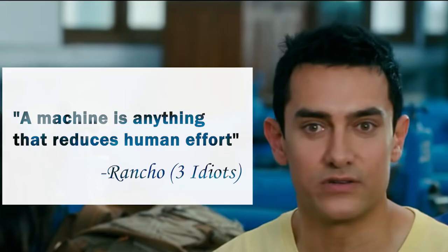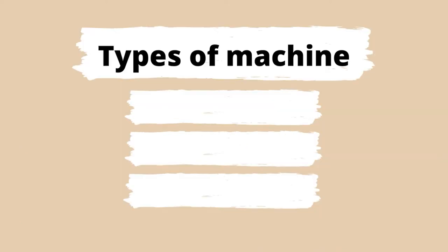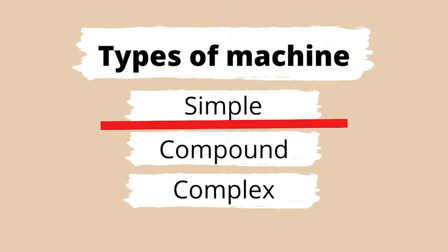In the movie 3 Idiots, Rancho, played by Amir Khan, defined a machine. Rancho's definition is simple yet encapsulating: any tool that makes our work easier with the application of minimal effort is a machine. There are three types of machine: simple, compound, and complex. We will focus on simple machines which surround us.